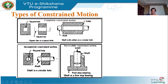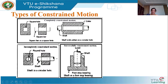In incompletely constrained motion, the motion between two elements is possible in more than one direction and depends on the direction of force applied. For example, a shaft in a circular hole with no collars — we can both rotate and slide the shaft. This is the difference from completely constrained motion, where we can only rotate the shaft but cannot slide it inside.